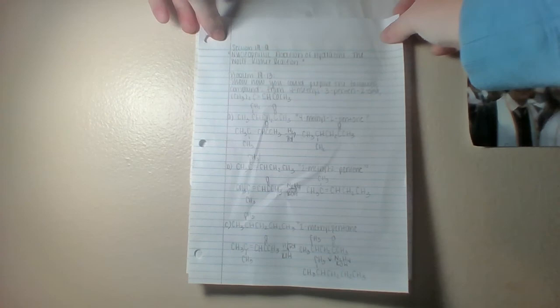is problem 19.13. The directions are to show how you could prepare the following compounds from 4-methyl-3-pentin-2-one, the compound shown below. In part A, we have 4-methyl-2-pentanone, so by adding H2 and Pd, we can see that we form 4-methyl-3-pentin-2-one.